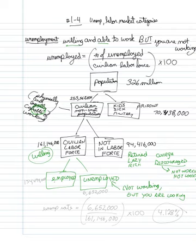If we want to find out how many people are employed, our number of employed people is 154,494,000. So that would mean 161,146,000 minus 154,494,000.